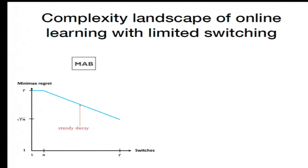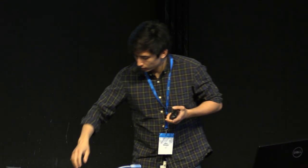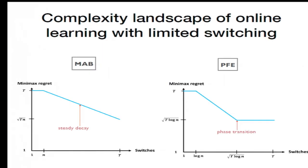And this figure is actually fairly well known. Basically, you interpolate linearly in this log-log scale. What our paper does is it shows the picture for the expert setting is very different. You have a certain phase transition, so if you have enough switches, you don't need any more.